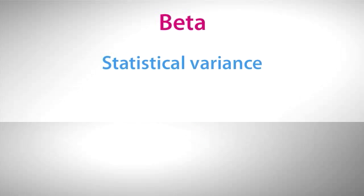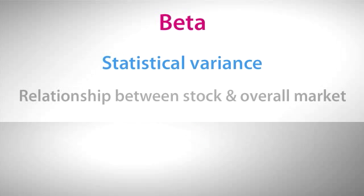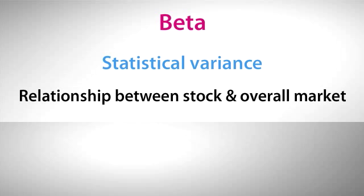Beta is a measure of statistical variance. It represents the relationship between a stock and the overall market, usually in terms of the S&P 500 index.